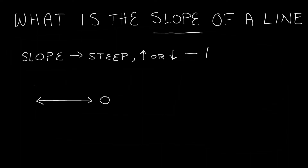What about a line that is lower on the left-hand side than it is on the right-hand side? This type of line increases as it goes to the right. Any line that increases as it goes to the right is going to have some positive number representing its slope. So a positive slope represents a line that gets higher — basically it increases as it goes to the right.